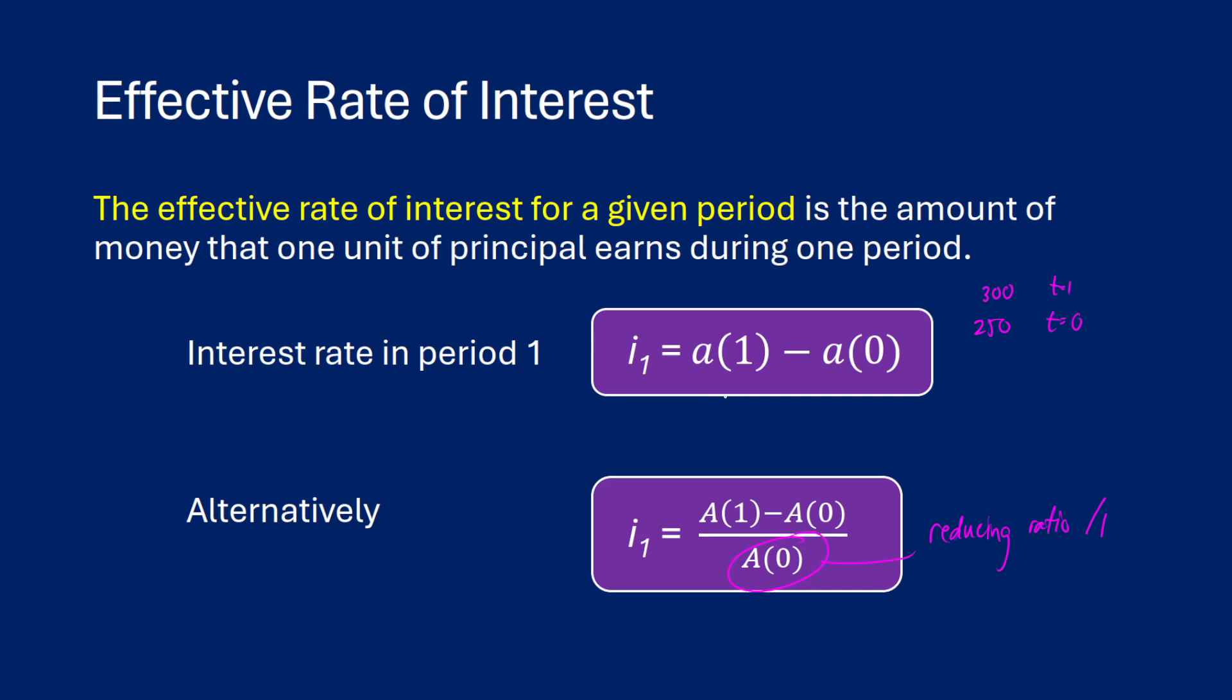And how we get from our first formula to our second formula is noting that A(t) is equal to P0 times little a(t). So if we do some division, then we would get big A(t) over P0 is equal to little a(t). So it's the amount function scaled down by our principal investment, and that's equal to our accumulation function. So you can just do some algebra and you can get yourself there.